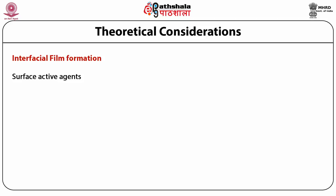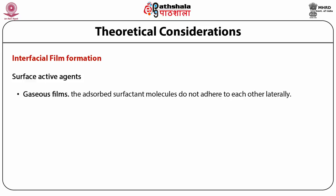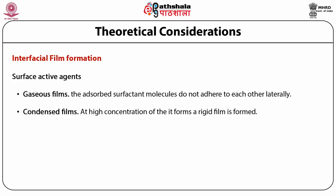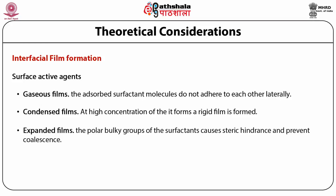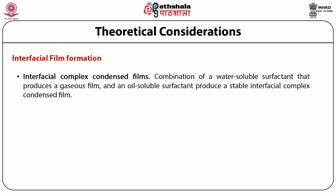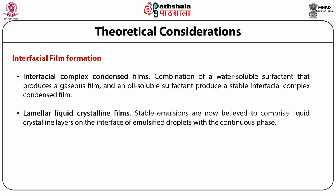Various types of films are generated under interfacial film formation. The first is the gaseous film, where adsorbed surfactant molecules do not adhere to each other and keep floating. In a condensed film, a rigid film is generated at high concentration of surfactant. In expanded films, the polar bulky groups of surfactants cause steric hindrance and prevent coalescence of droplets. An interfacial complex condensed film results from combination of a water-soluble surfactant that produces a gaseous film and an oil-soluble surfactant to produce a stable interfacial complex condensed film.